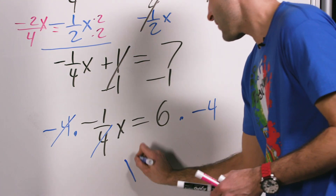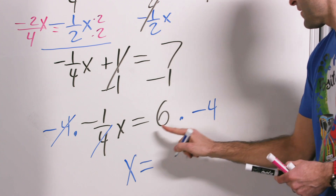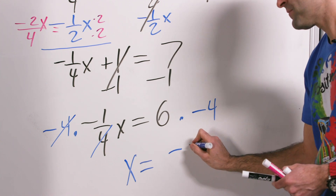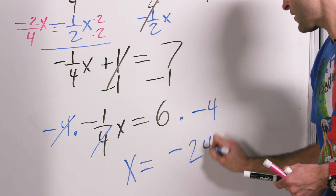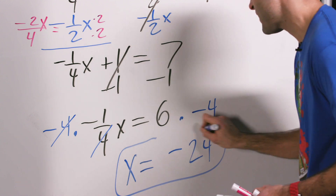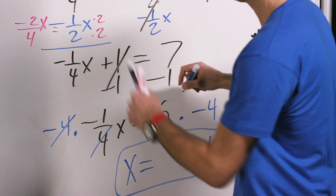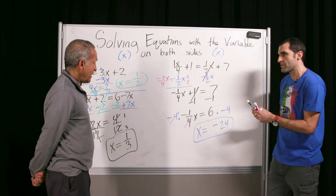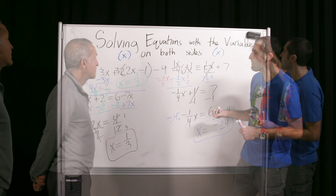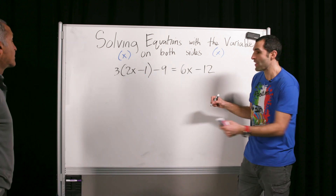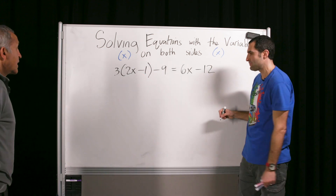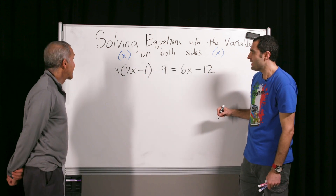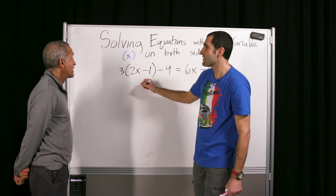So x equals what? Minus 24. Good job! Isn't it cool? You can break down a complex problem into a series of small steps. That's also helpful. Let's try another one. Solve for x.